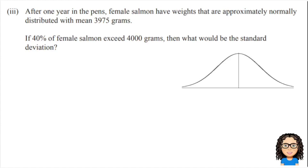So here is our question. This is now talking about female salmon rather than male salmons, and we're told that they've got a weight that's approximately normally distributed with a mean of 3,975 grams. So I'm going to put that on my diagram first of all. I've got my little normal distribution and I'm going to add that mean of 3,975.